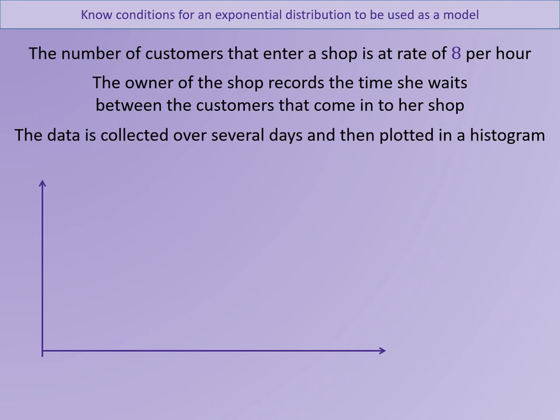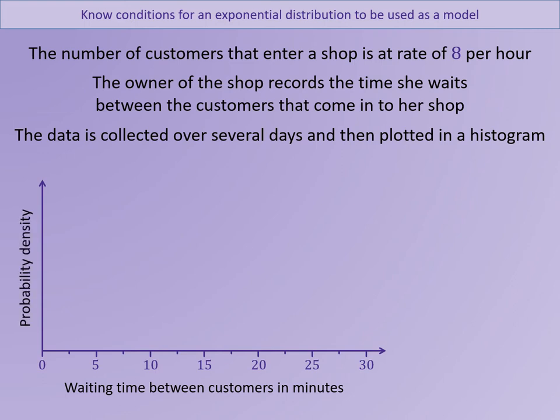We've got the data plotted onto a histogram — it has to be a histogram because it's continuous data. Along the bottom is wait time between customers in minutes, and at the side is probability density. Think about what the sketch of that histogram would look like.